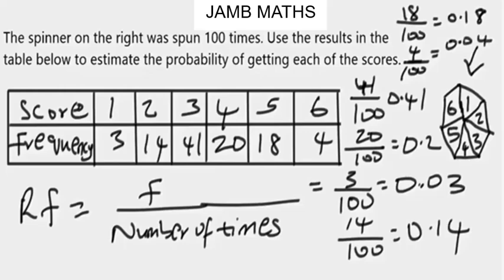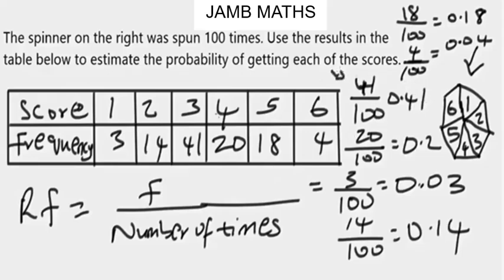Note that the more times you do the experiment, the more accurate your estimates of the probability will be. If the relative frequency of a result is far away from what you'd expect, then you can say the dice, spinner, or coin used is probably biased. If not, you can say it seems fair. Now, do the above results suggest that the spinner is biased? The answer is yes.